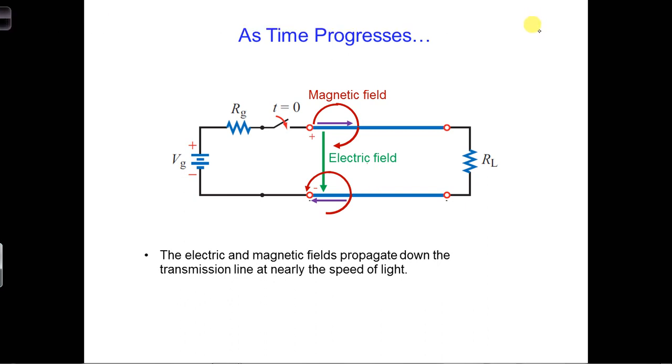Getting back to our transmission line diagram, we can imagine that as time progresses, electrons are moving in the conductors when there's current, but the signal is not carried by the electrons, which migrate very slowly down the transmission line.